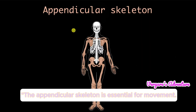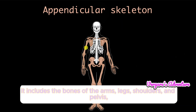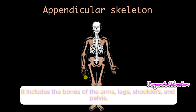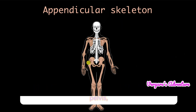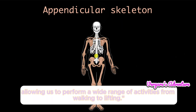The appendicular skeleton is essential for movement. It includes the bones of the arms, legs, shoulders, and pelvis, allowing us to perform a wide range of activities from walking to lifting.